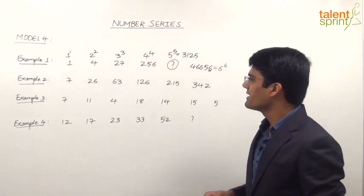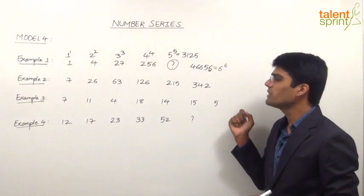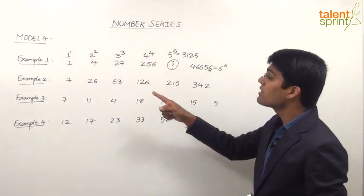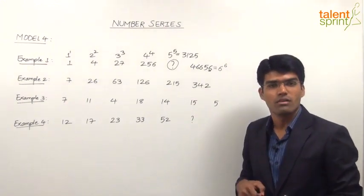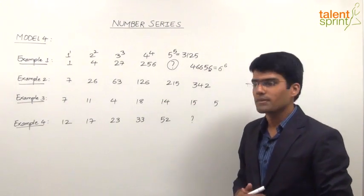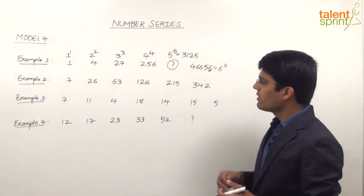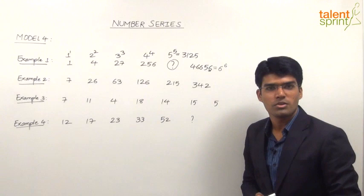The next question here is 7, 26, 63, 126, 215, 342 and we are supposed to find out which of these numbers is wrong or there is one number here which does not fit in the series. What is that number?